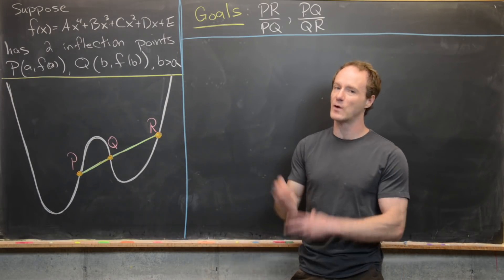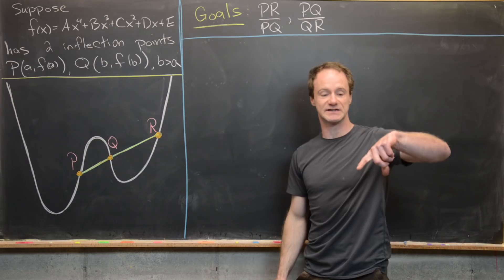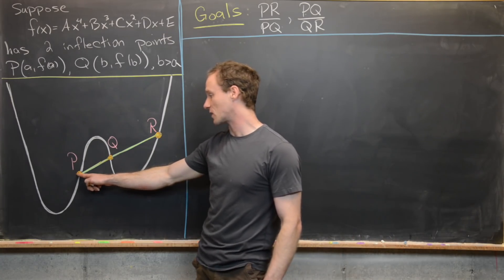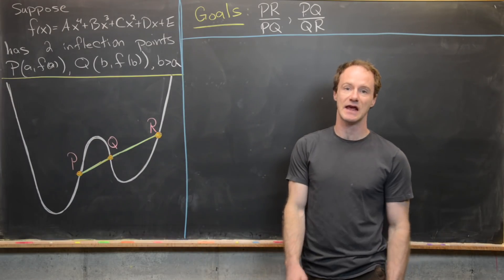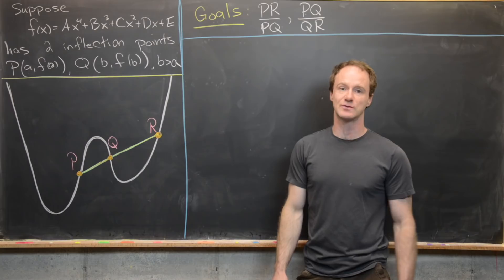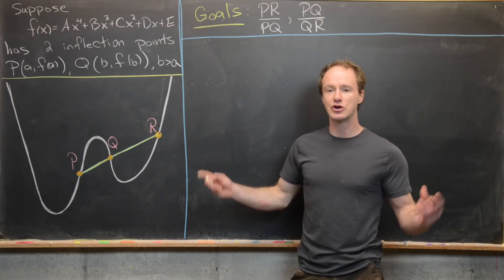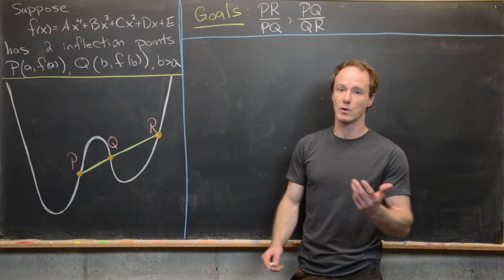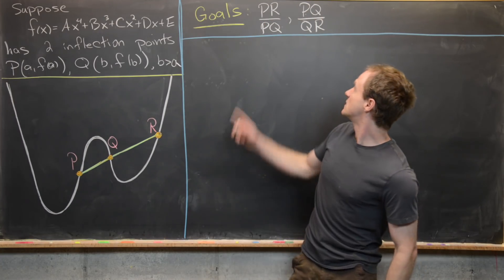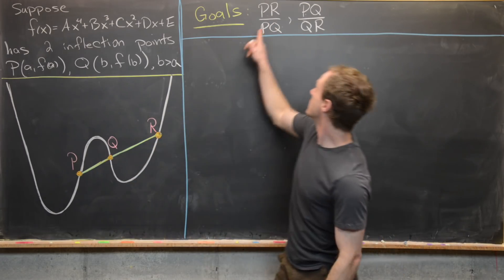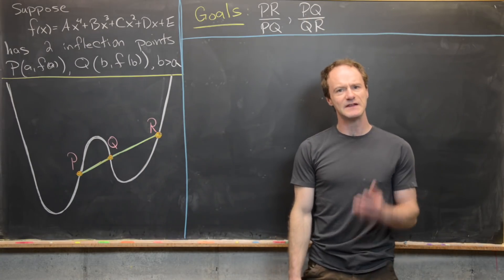Here's a picture of what this might look like: a quartic polynomial facing upwards, though the same applies facing downwards. P is the leftmost inflection point and Q is the rightmost. I've found the secant line containing P and Q, and then found the right intersection point of that line with the curve. Our main goals are to determine two ratios: the ratio of line segment PR to PQ, and the ratio of PQ to QR.